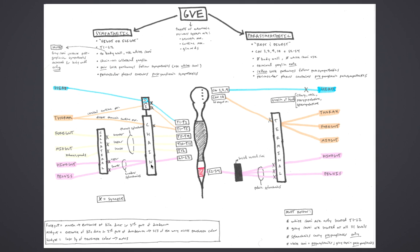The sympathetics also serve the body wall, with targets being the sweat glands, erector pili muscle, and vascular smooth muscle. These sympathetics arise from all segments T1 to L2 and utilize the sympathetic chain to reach their targets. Sympathetic neurons destined for the body wall are the only neurons that utilize gray rami. Postganglionic fibers from the chain ganglia rejoin the spinal nerve via gray rami and distribute to the body wall via ventral and dorsal rami.